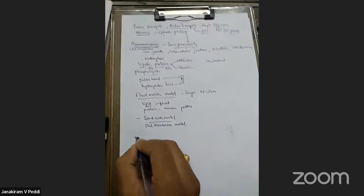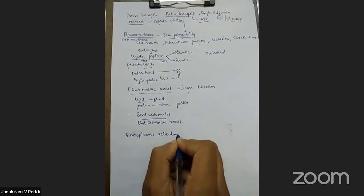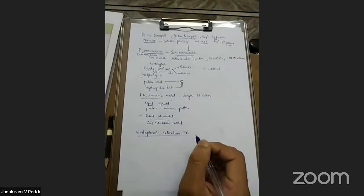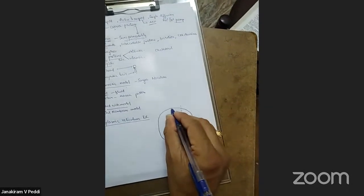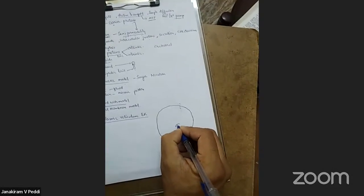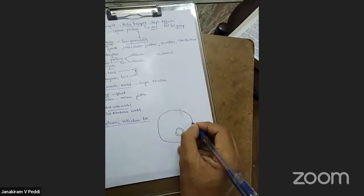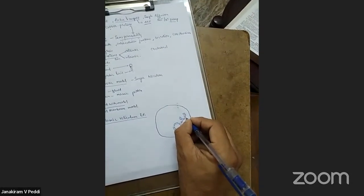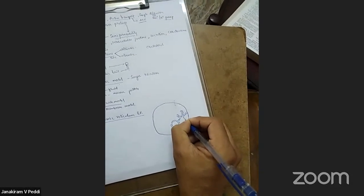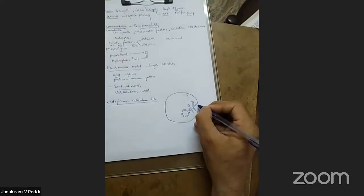Now let us look at cell organelles, starting with the endoplasmic reticulum. The endoplasmic reticulum is connected from the nuclear membrane to the plasma membrane, running throughout the cell. The outer part is called the extra-luminal part and the inner part is called the luminal part.